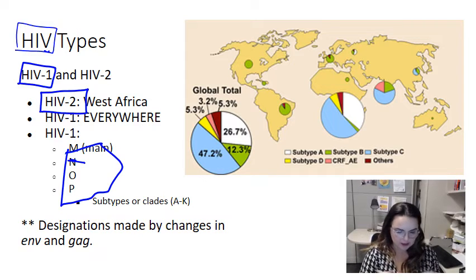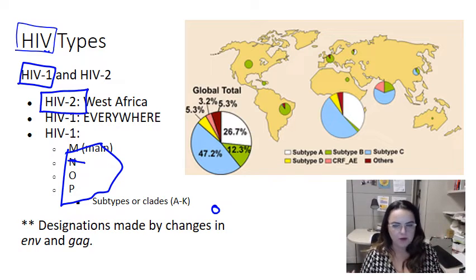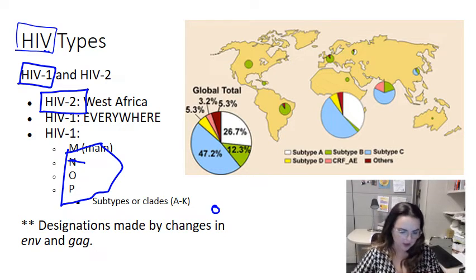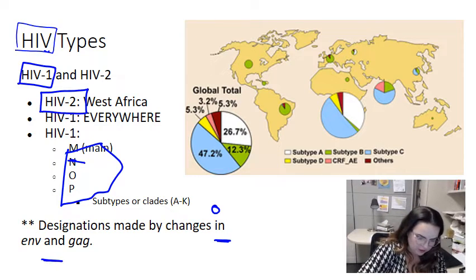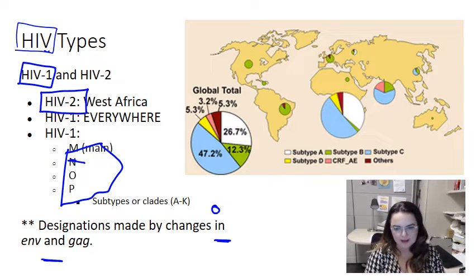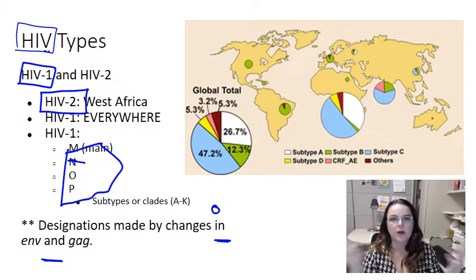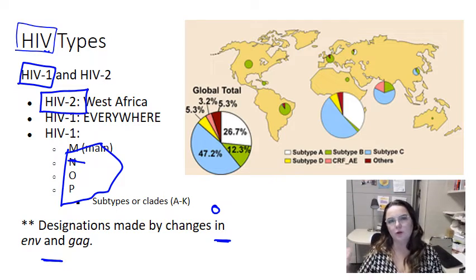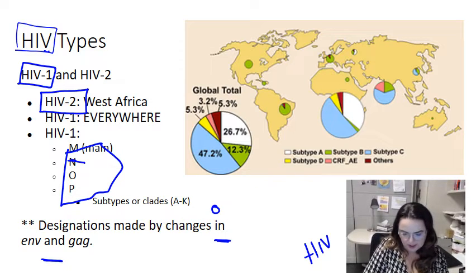The subtypes of HIV-1 may be known as A through K, and when there are mutations they get additional labels — it's very confusing. Just know there are these different types and when I talk about HIV I'm largely talking about HIV-1. These various designations are made because of sequence differences in two important viral proteins: env and gag. Both HIV-1 and HIV-2 are able to progress to AIDS; HIV-1 tends to do so more quickly and has a higher infectivity rate.